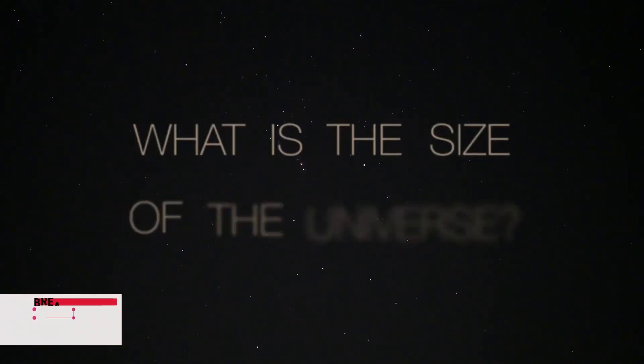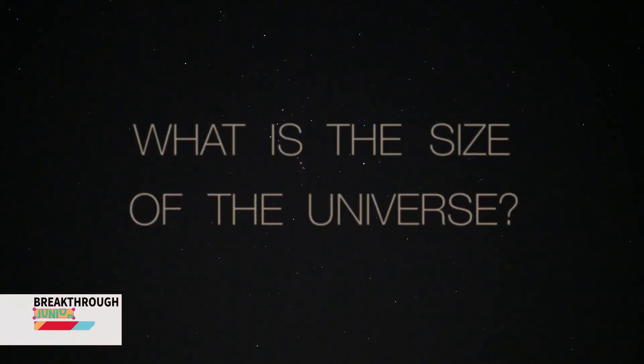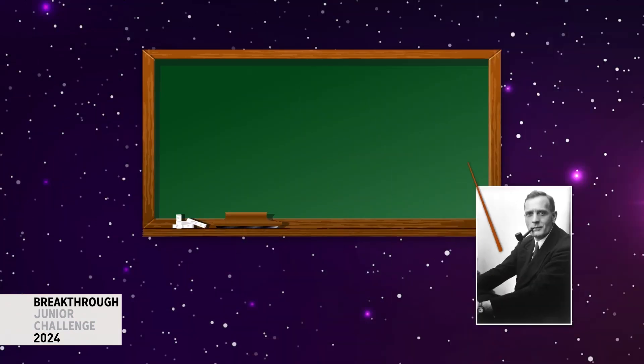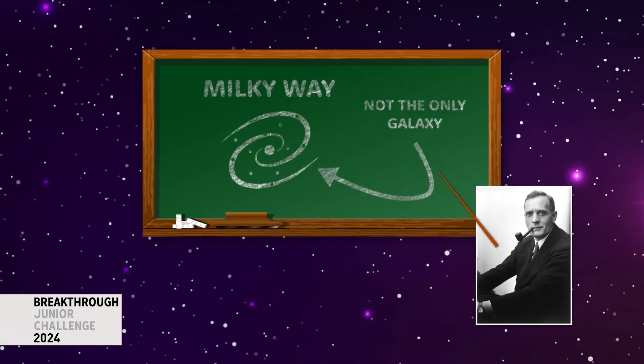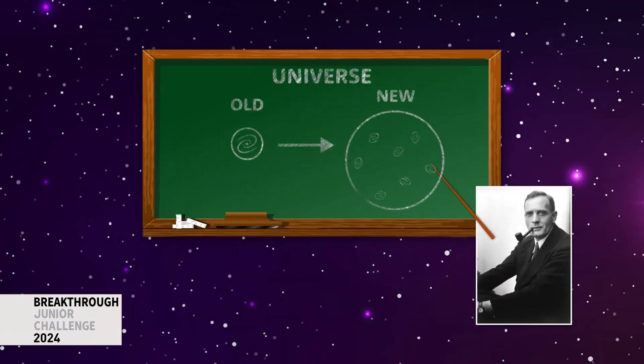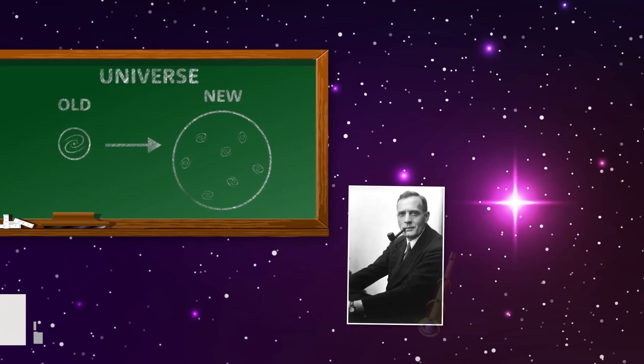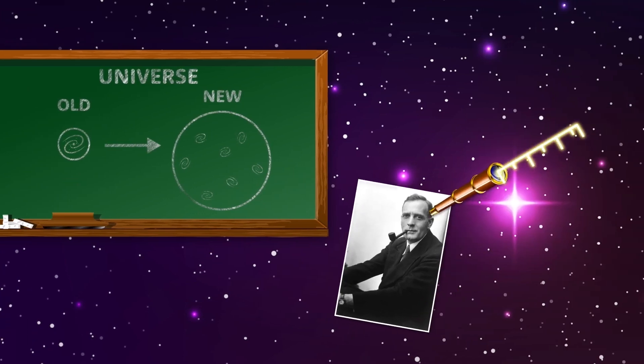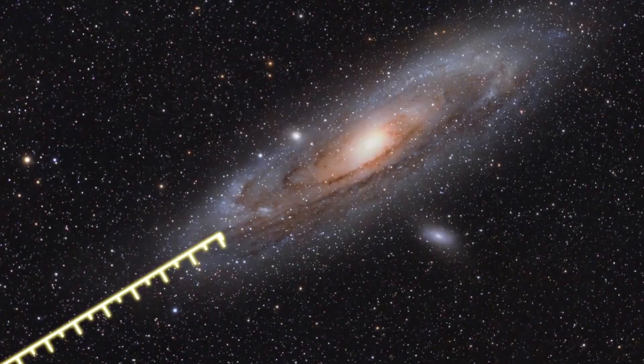What is the size of the universe? In 1924, Edwin Hubble became the first to demonstrate the existence of galaxies other than ours, proving that the universe was much larger than we initially thought. He did this by measuring the distance to our next-door neighbor, the Andromeda Galaxy.